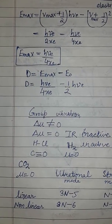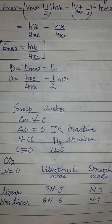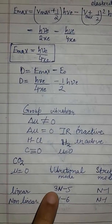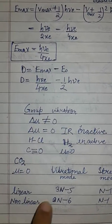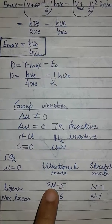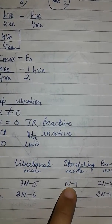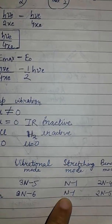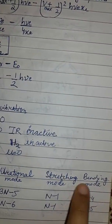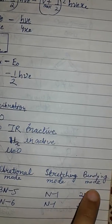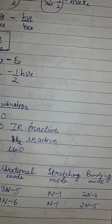For a linear molecule, the vibrational mode is given by 3n minus 5, and for a nonlinear molecule the vibrational mode is 3n minus 6, where n is the number of atoms. The stretching mode for both linear and nonlinear molecules is n minus 1. For bending, the linear molecule bending mode is 2n minus 4, and for nonlinear it is 2n minus 5.